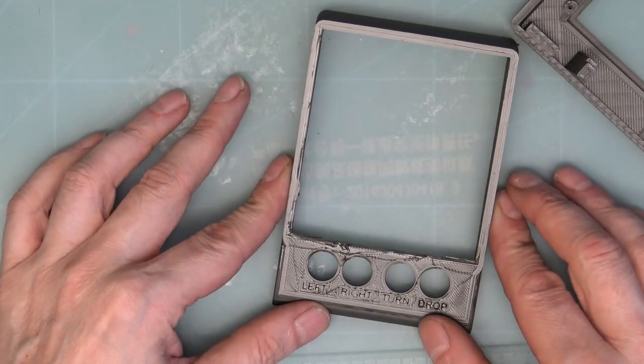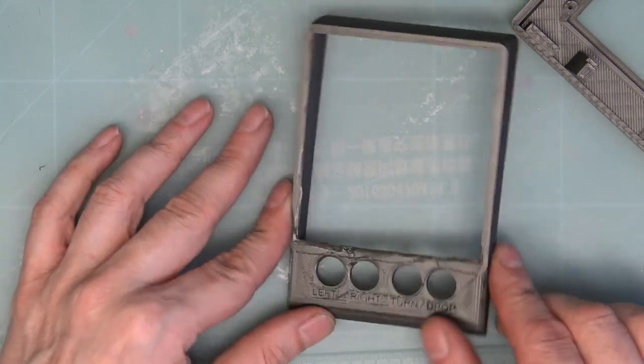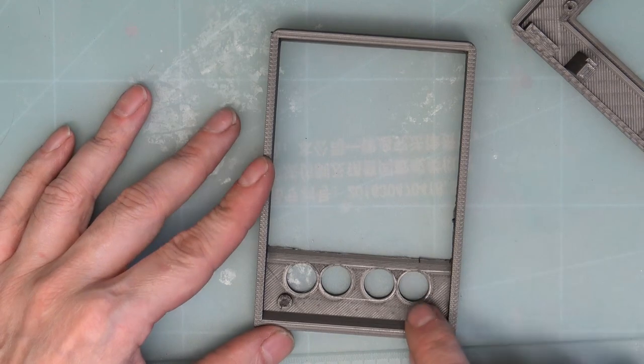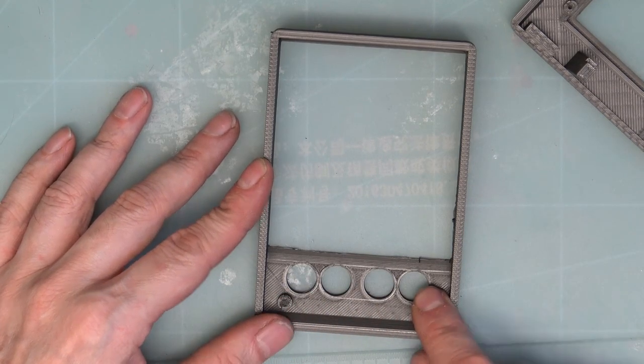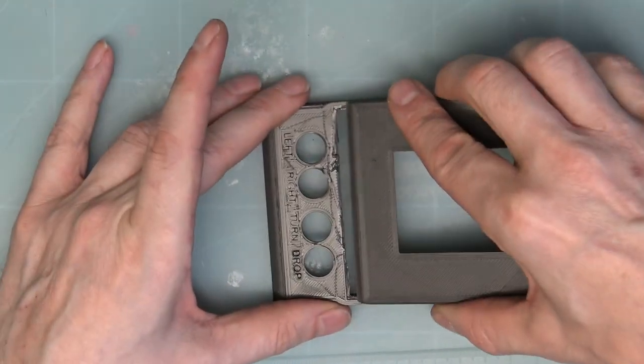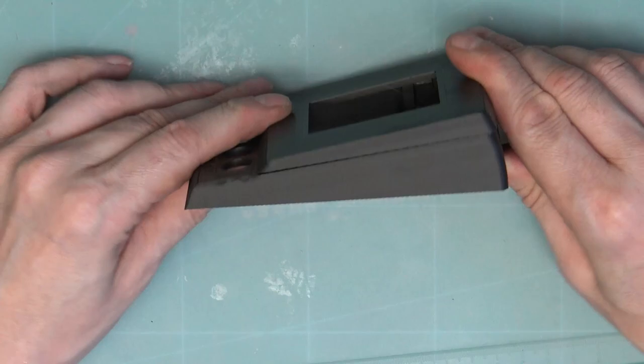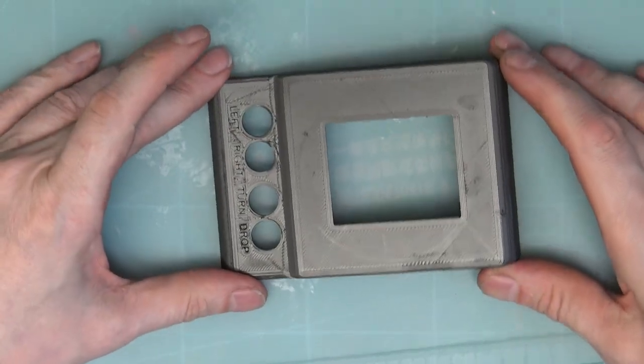We've got the supports at the bottom for the game board. That would slide into there and clip down into place.